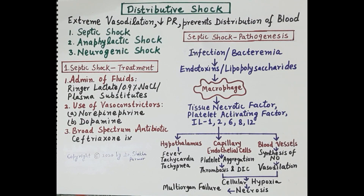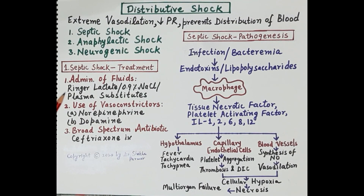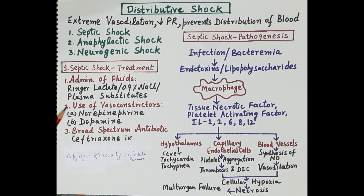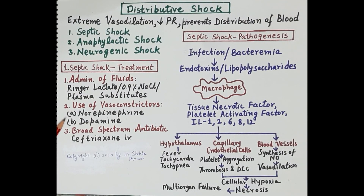For treatment of septic shock, the first strategy is to administer fluids — isotonic crystalloids like Ringer's lactate and normal saline (0.9% sodium chloride) — along with plasma substitutes. The second strategy is use of vasoconstrictors, that is sympathomimetics, which constrict blood vessels, increase peripheral resistance, increase blood pressure, and improve circulation to tissues. Vasoconstrictors used include norepinephrine and dopamine.